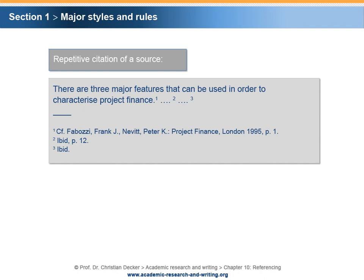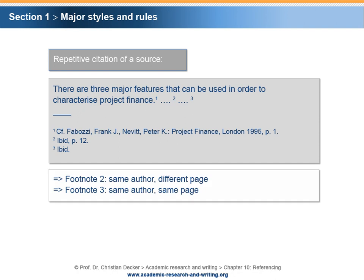Footnote number 2 indicates that the citation refers to the same source, but a different page. Footnote number 3 indicates that the citation refers to the same source and the same page.